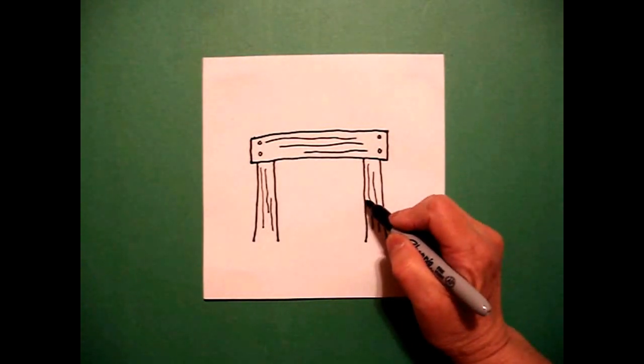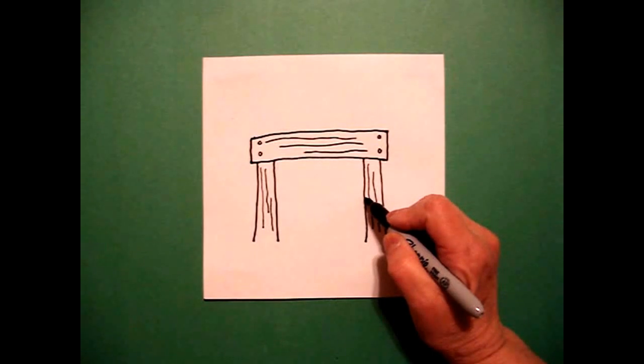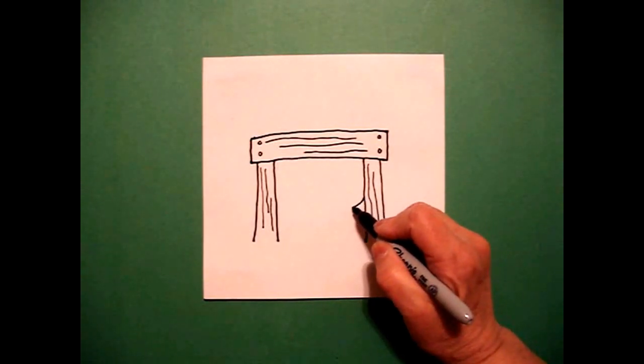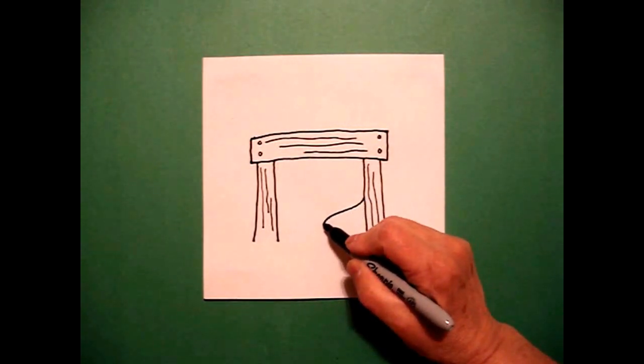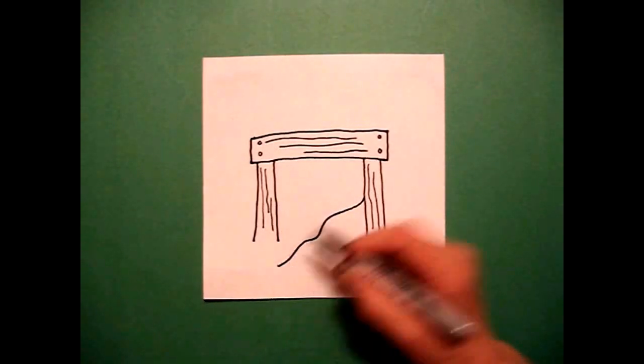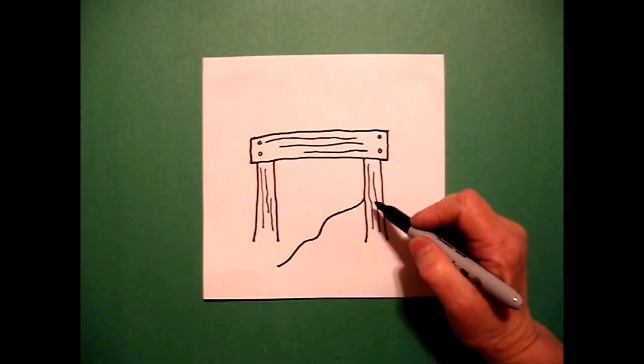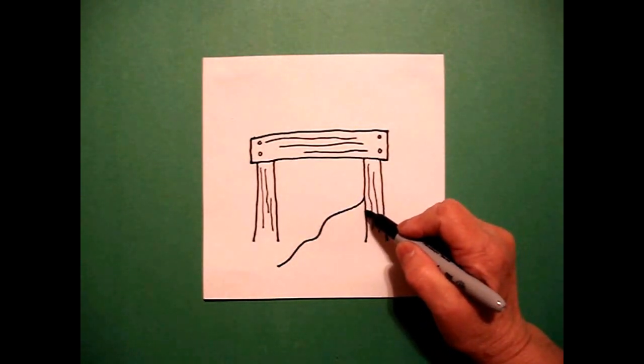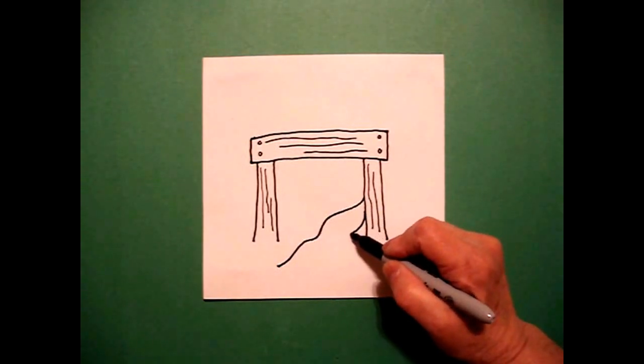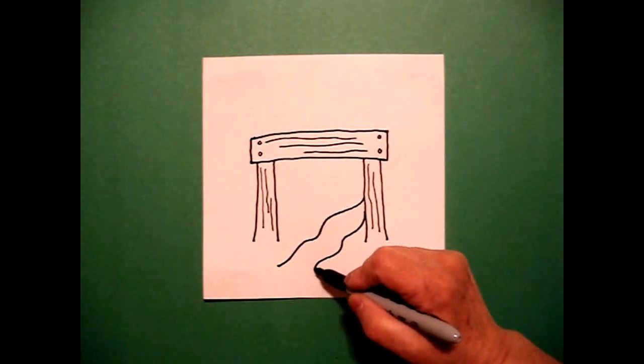Now on the right hand side, right about midpoint, I'm going to draw a wavy line down and out. I come back up and I'm going to draw another wavy line. I'm going to mimic it all the way down.